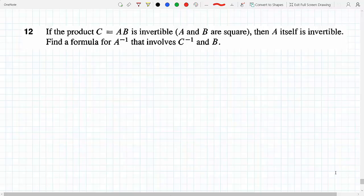If the product C equals AB is invertible where A and B are square, then A itself is invertible. Find a formula for A inverse that involves C inverse and B. So that means you have to get A inverse into the situation.